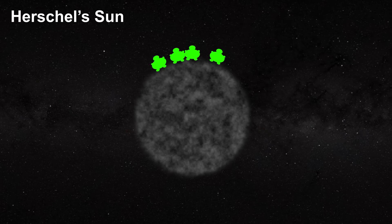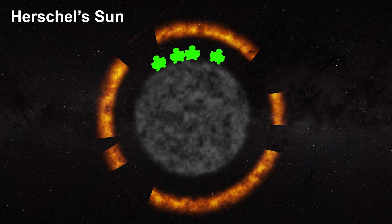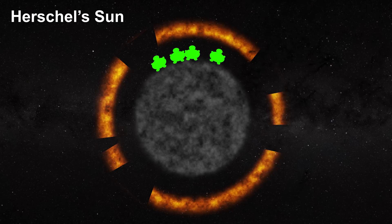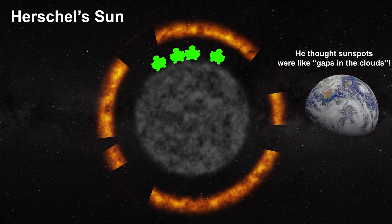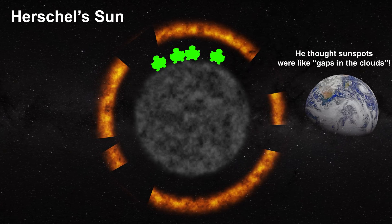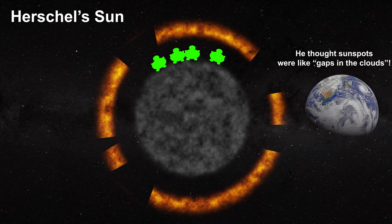Herschel's sun was populated with strange beings, which he called solarians. In his mind, the photosphere was like a cloud floating above the true solar surface. The strong light of the sun came from these clouds. The idea makes some sense if you think of the earth and its atmosphere. Sunspots on the sun were like clouds here on earth. In his mind, sunspots permitted him to view the surface of the sun upon which his solarians lived.